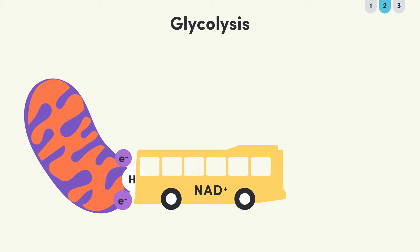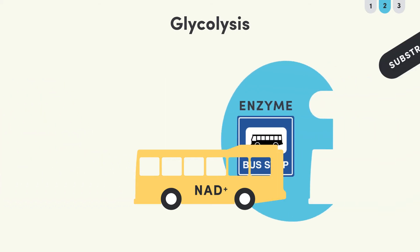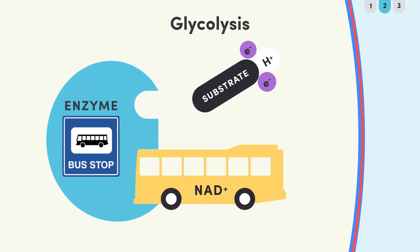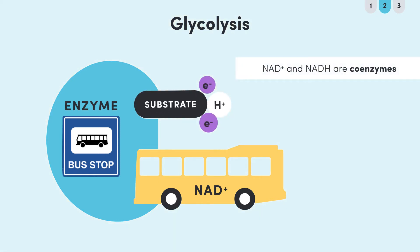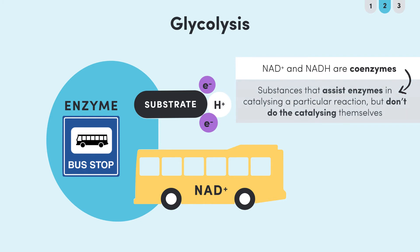Once it has unloaded the proton and electrons, the NAD+ will head back to the cytoplasm, ready to load on some more passengers from glycolysis. For this reason, NAD+, or in its loaded form NADH, is referred to as a coenzyme — a substance that assists the enzymes catalyzing a particular reaction, but doesn't do the catalyzing itself.